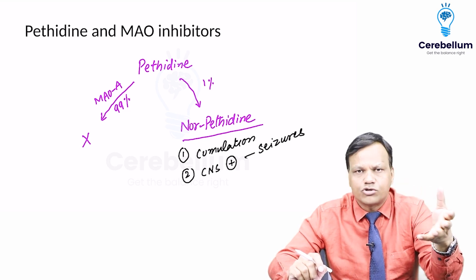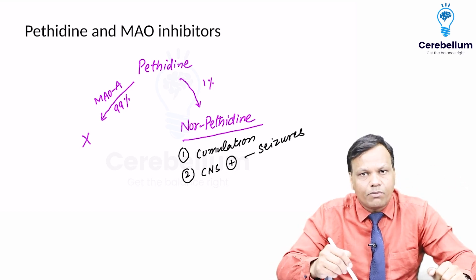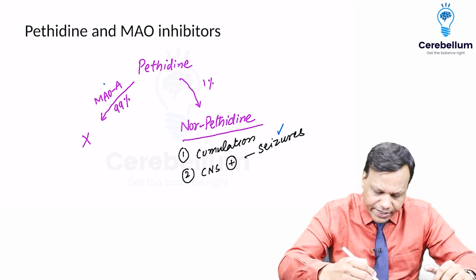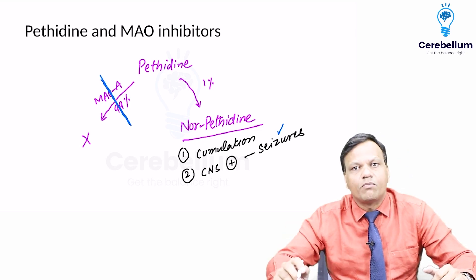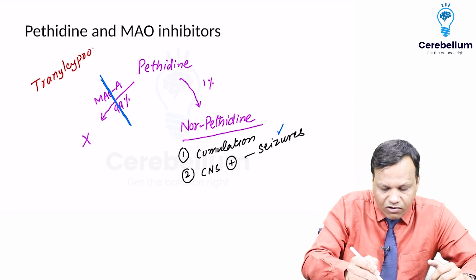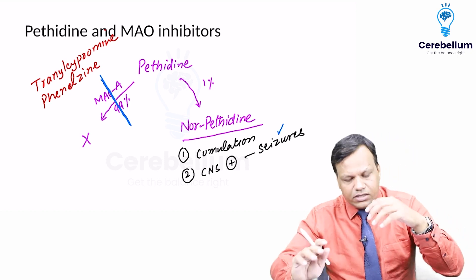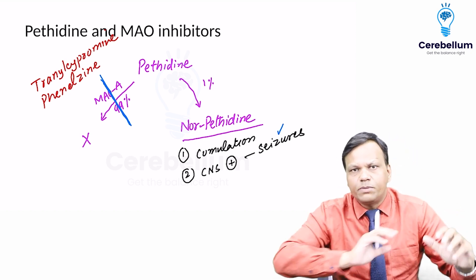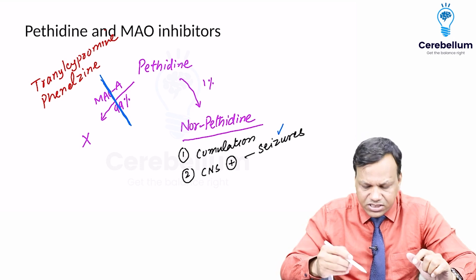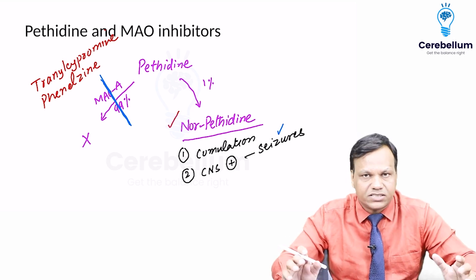That is why pethidine should not be given for long periods. One or two days is fine, but giving it for one month is not safe, because this one percent will keep accumulating and can result in seizures. Furthermore, if the patient is already taking MAO inhibitors — such as tranylcypromine or phenelzine, used for depression — even a single dose of pethidine can lead to seizures, because all 100% will start producing norpethidine. So pethidine is contraindicated with MAO inhibitors.